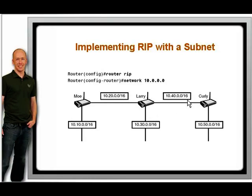This means that even if you are subnetting, you should enter the major class A, B, or C address. Our three friends have new networks that are taken from a major class A network. Even though multiple networks are attached to them, enter only the major 10.0.0.0/8 network. Thus, all three routers would have the same configuration.